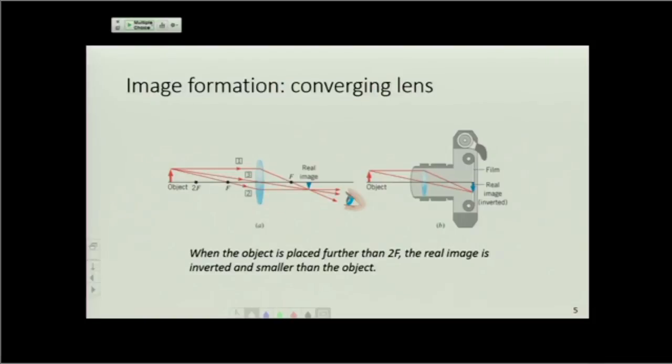What happens if I move the object distance further away? What's going to happen is that the image remains inverted, because it will remain real, and as I said, the image distance decreases. That means the magnification is going to go down. The image is inverted and smaller than the object.